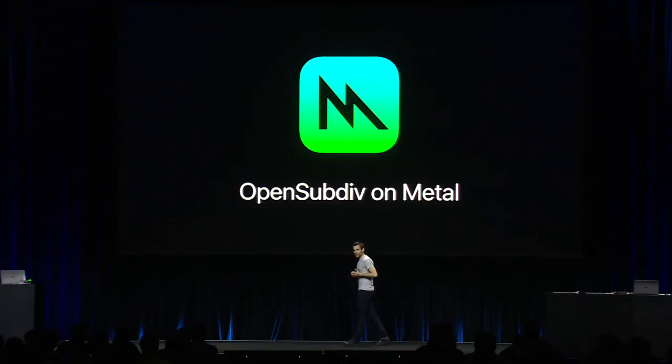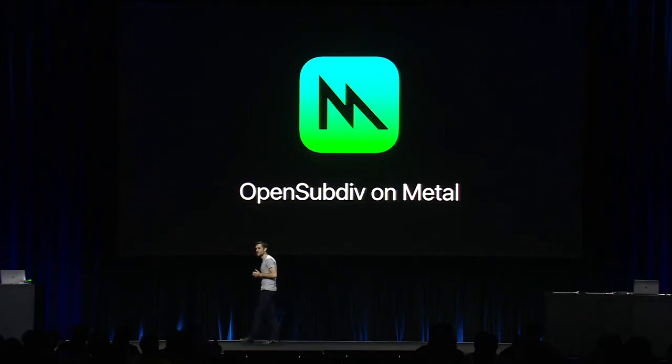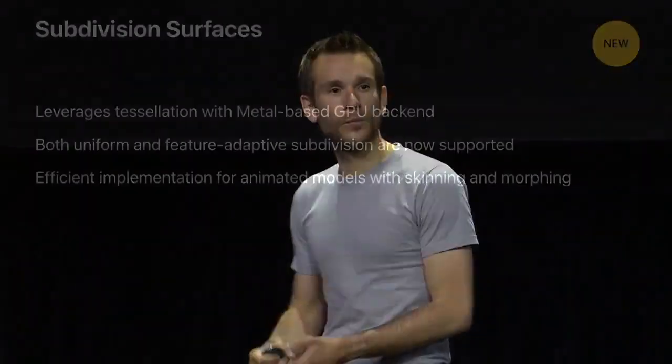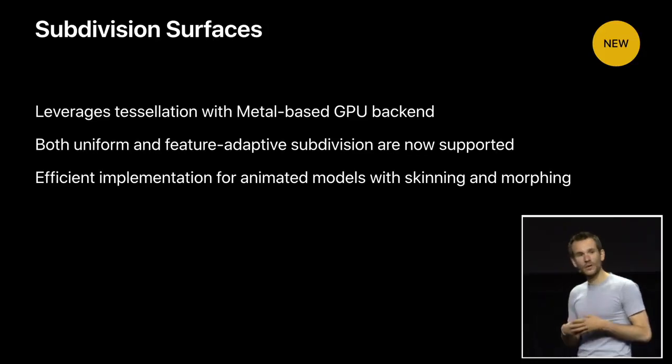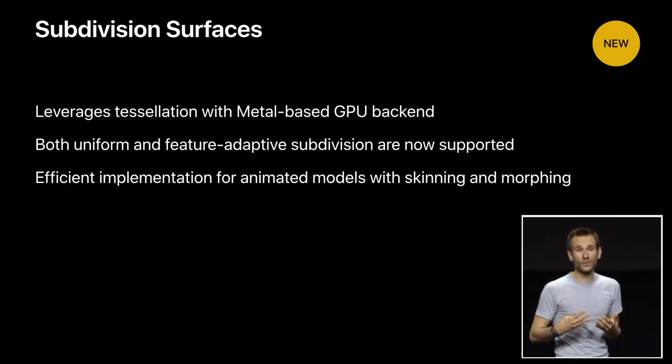We added support for subdivision surfaces a few years ago in SceneKit, but we used to run the subdivision code on the CPU — which could take time and a huge amount of memory, especially at higher subdivision levels as the number of vertices grows exponentially. We have great news this year. You may have heard about the OpenSubdiv project from Pixar — an open-source implementation for efficient evaluation of subdivision surfaces. Last year at WWDC, Apple announced contributing to this project with a Metal-based implementation so you can run subdivision code on the GPU using Metal. This year, you can leverage all these amazing technologies very easily — with the Metal-based implementation come many advantages, including leveraging tessellation with all the memory benefits discussed earlier.